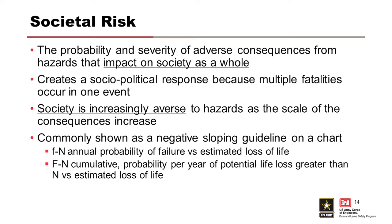Societal risk is the risk posed by a structure to groups of people. Society is generally increasingly averse to catastrophes that affect larger groups — the more people affected, the less willingness society has to tolerate those larger catastrophes. Dam agencies have all chosen to use little FN or big FN charts with sloping diagrams to represent society's increasing aversion to large-scale events, and these charts are how we portray and evaluate societal risk.